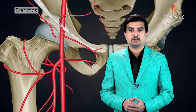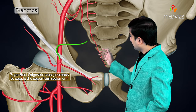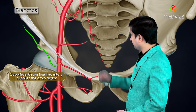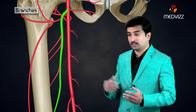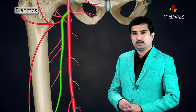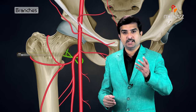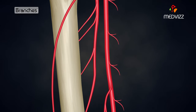In detail: the superficial epigastric artery ascends and supplies the superficial abdomen. The superficial and deep external pudendal arteries supply the superficial perineal region. The profunda femoris artery is the largest branch of the femoral artery. It arises from the lateral side, about four centimeters below the inguinal ligament, and gives off the medial and lateral circumflex femoral arteries. It also gives off three perforating branches and ends as the fourth perforating artery.